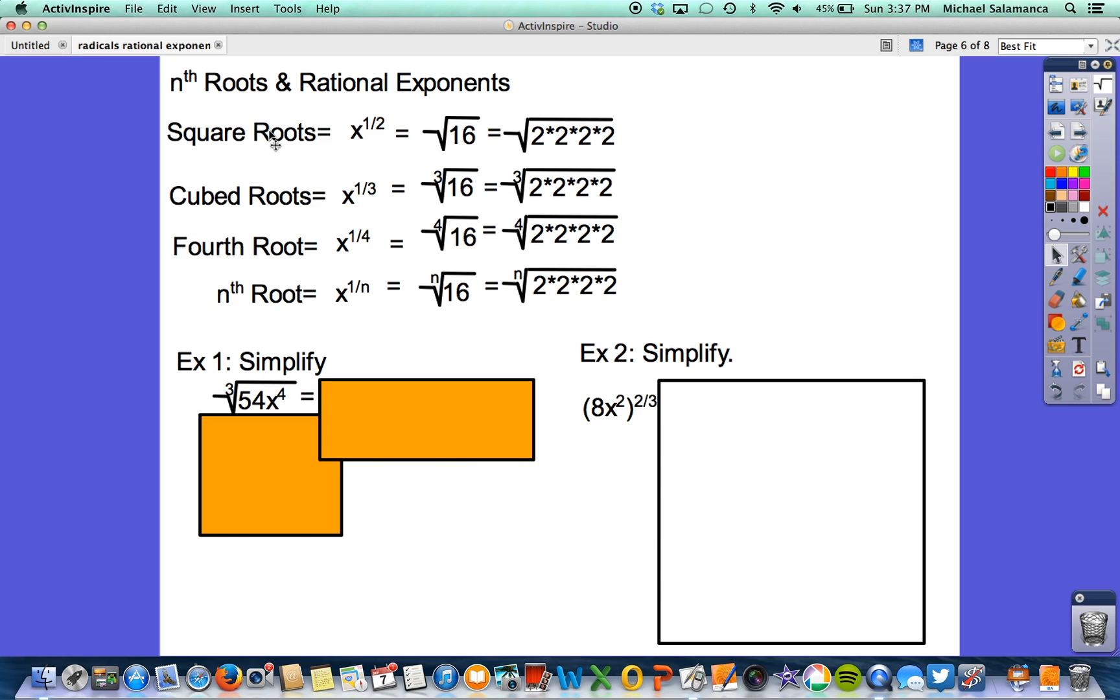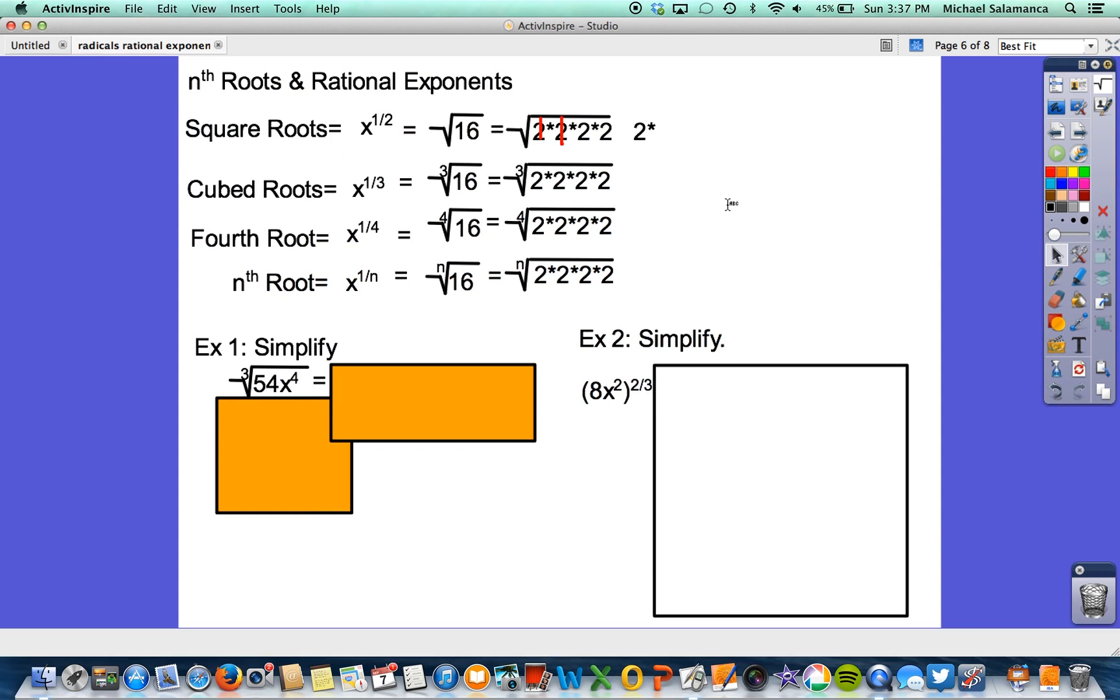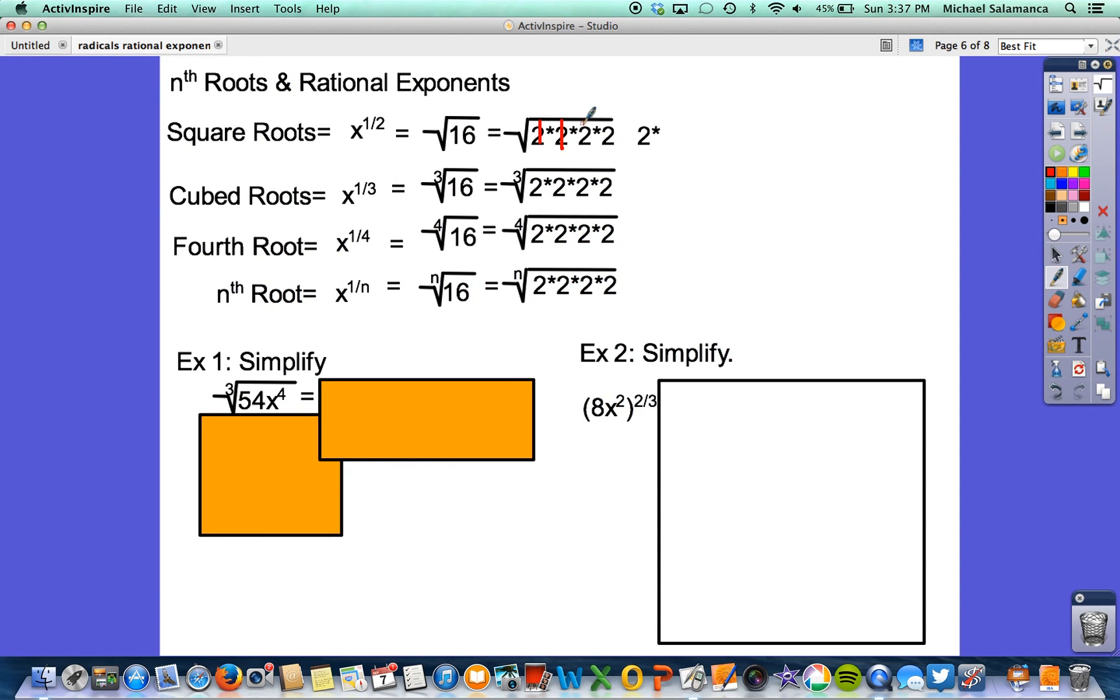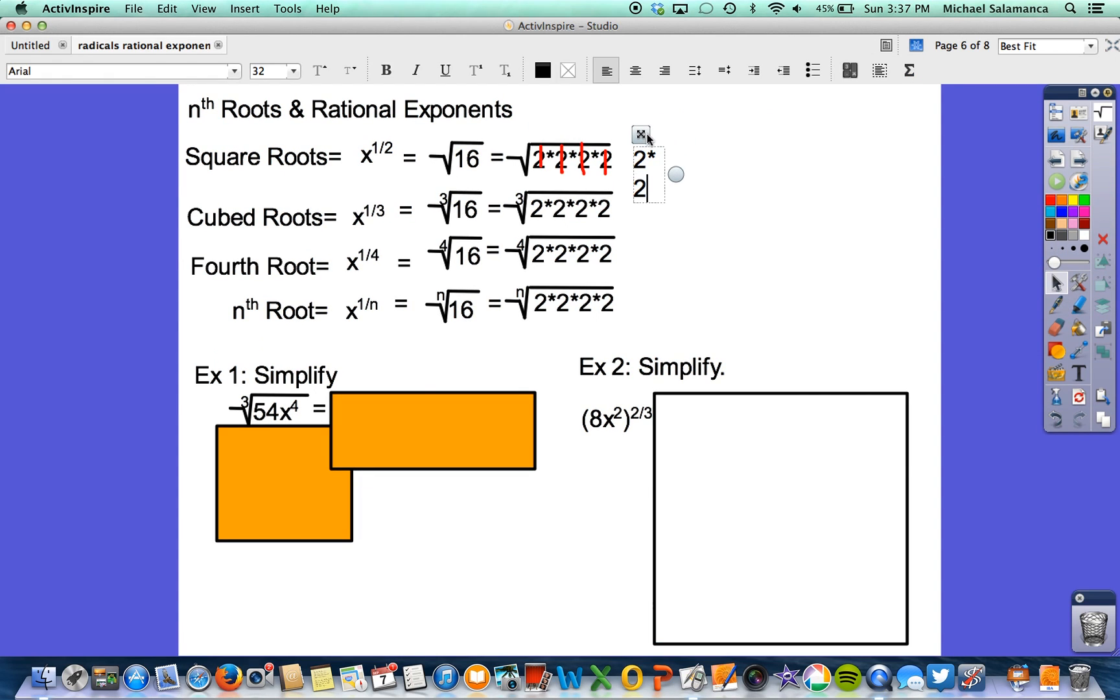A square root is when we're looking for a pair of things to cancel out. So an example here for the square root of 16, we can cancel out the two 2's. We're going to write one down. And we have two other 2's, so we're going to cancel those out as well. And we're left with 2 times 2, which is just equal to 4.